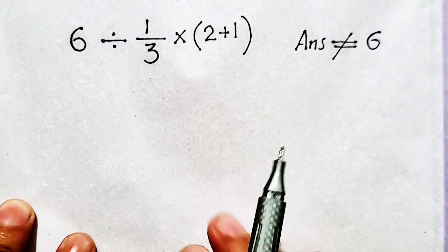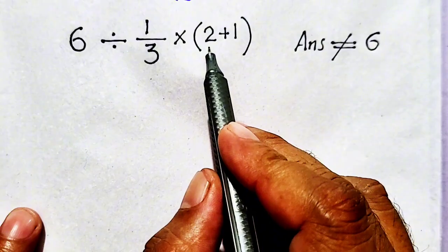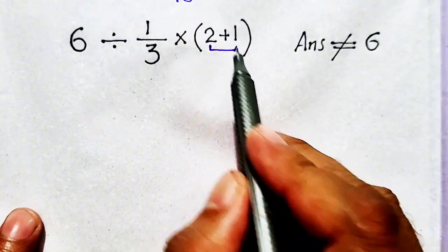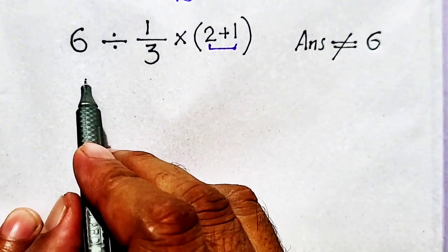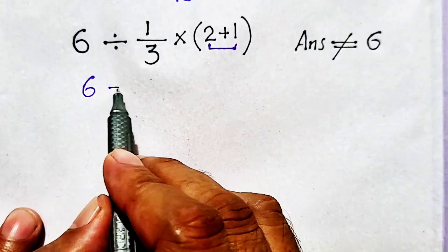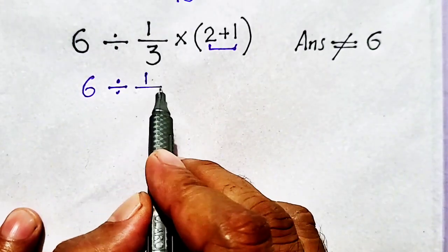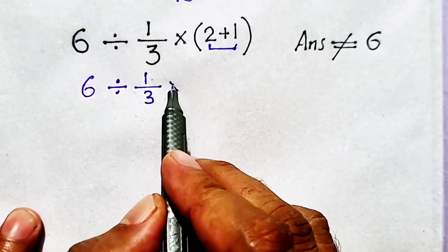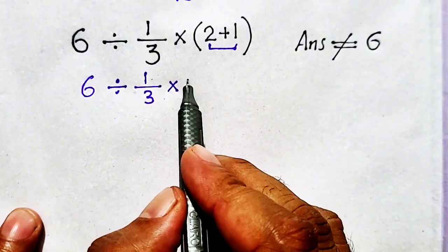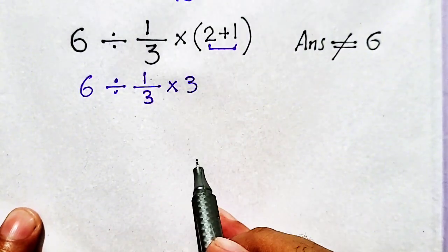It is very simple. First of all, we have to solve parenthesis, so 6 divided by 1/3 times (2 plus 1) equals 3.